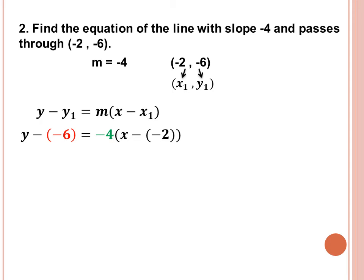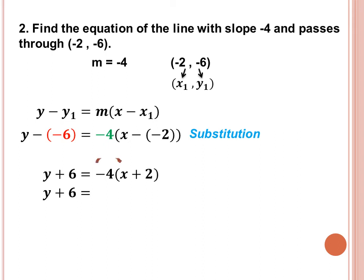We can see that we are subtracting a negative, so we simplify: y minus negative 6 becomes y plus 6, because negative times negative is positive. So this becomes y plus 6 is equal to negative 4 times the quantity x plus 2. Next, we multiply negative 4 to x plus 2: negative 4 times x is negative 4x, and negative 4 times 2 is negative 8. This is by the distributive property.